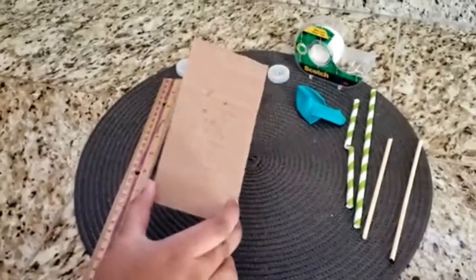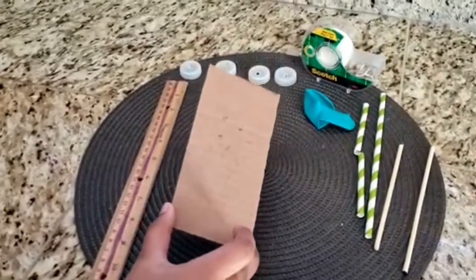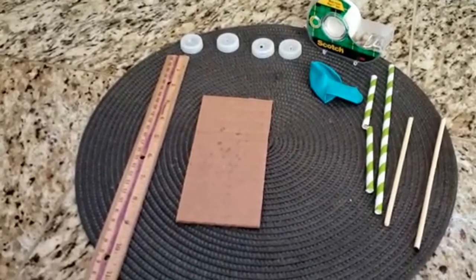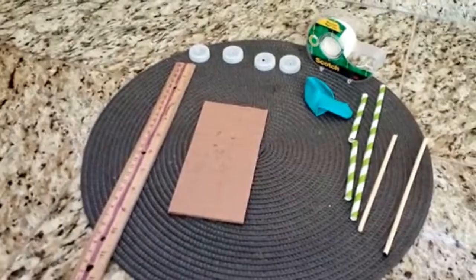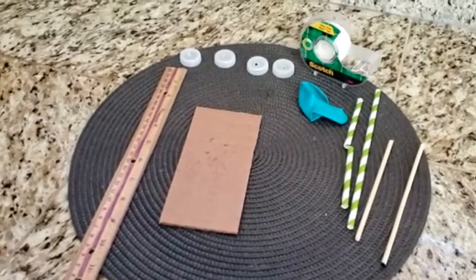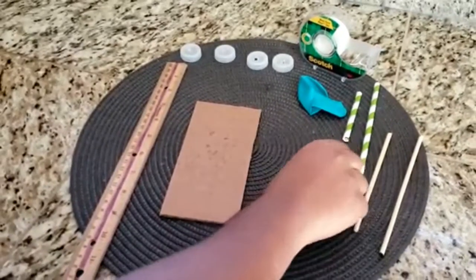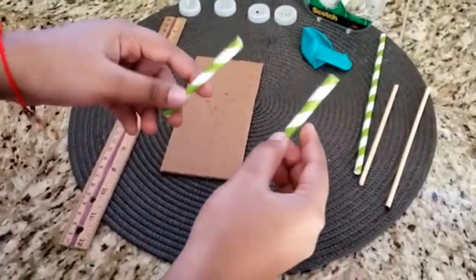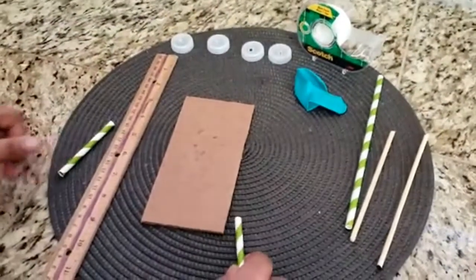Cut the cardboard into a three by six inch piece. That is the body of the car, so we've already done that. Print one straw so you have two three inch pieces like we have done right here.